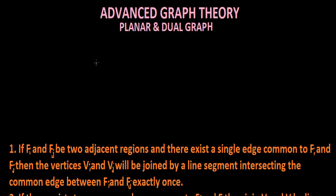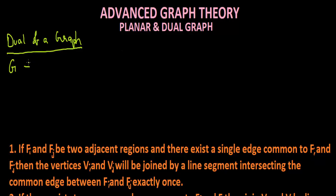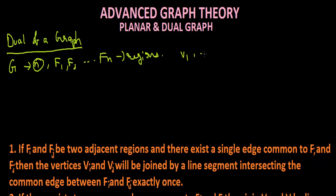We'll be continuing advanced graph theory on planar and dual graphs. Today we'll see the dual of a graph. Let G be a graph having vertices and regions f1, f2, up to fn respectively, with n vertices v1 up to vn.